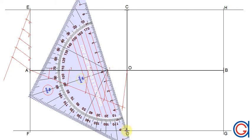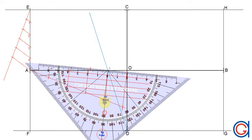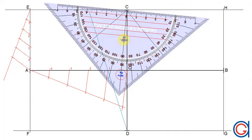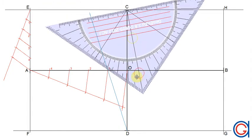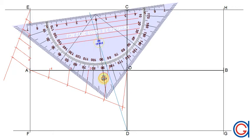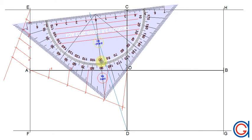Changing our construction line to a blue color, we draw a line from point D going through point one of the line segment AO and elongating it as shown. The next step is to join point C with point one of the line segment EA, where it cuts the previously drawn blue line at a new point which we call one prime — and this is going to be a point on the ellipse that we are going to draw.